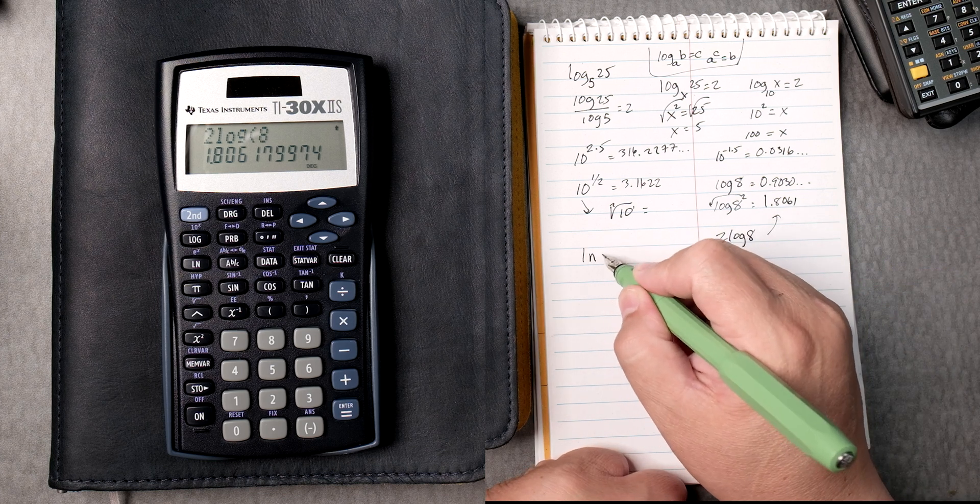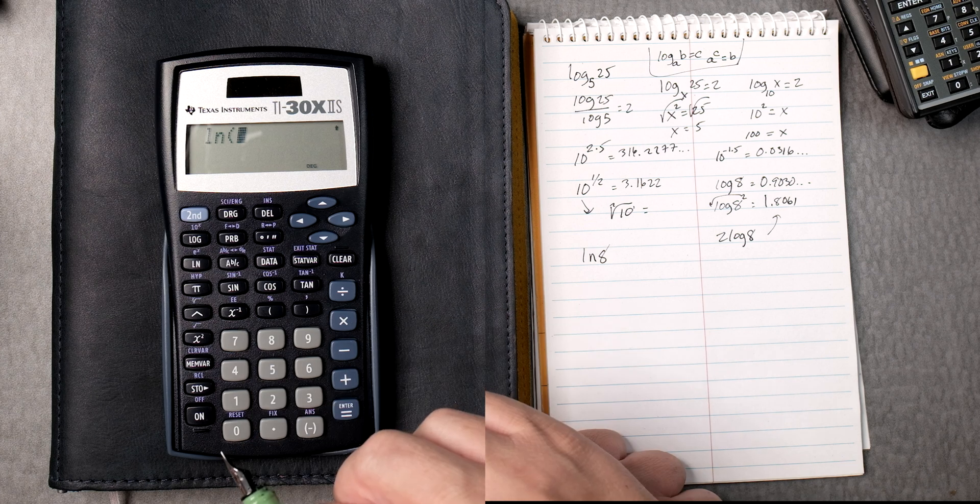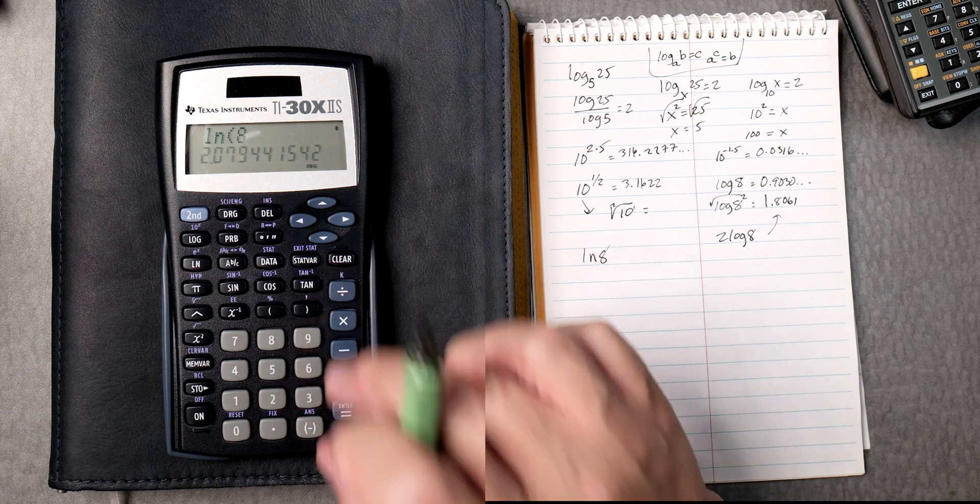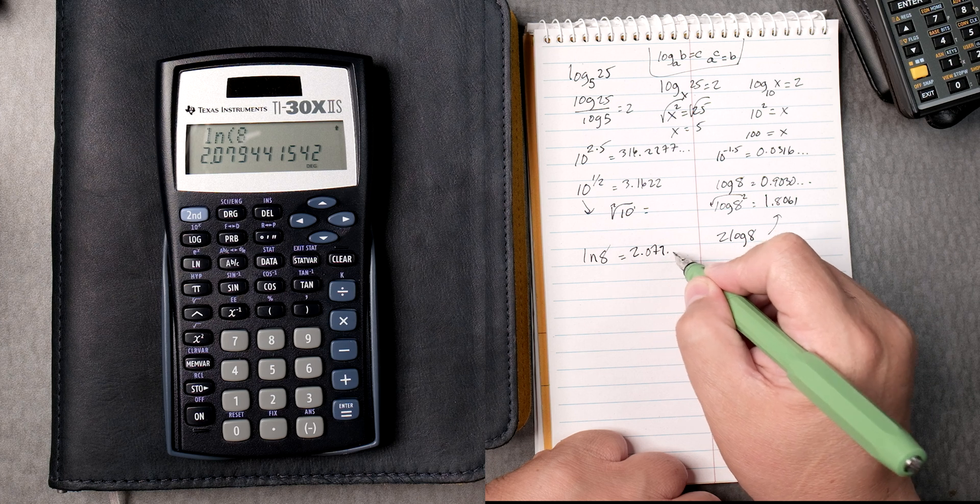Now, let's do the natural log of 8. Natural log, 8, enter. That gives you 2.079, and it keeps going.